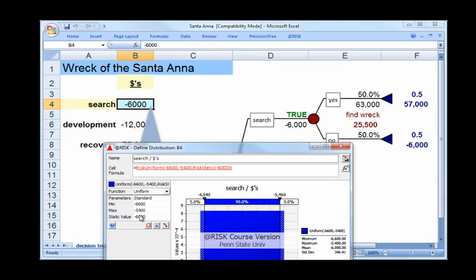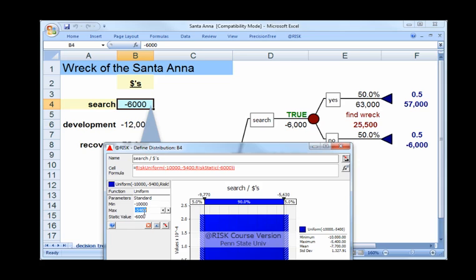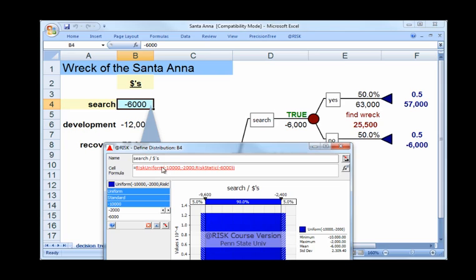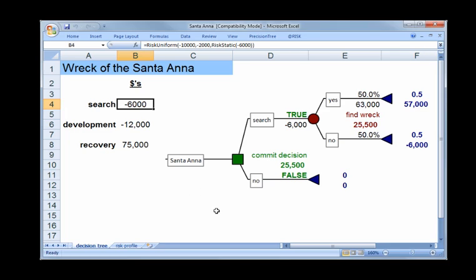There it is. And the only thing we have to do to define the uniform distribution is enter the minimum and the maximum. Keep in mind things are in negatives here. So minus $10,000 is the small number, minus $2,000 is the maximum. And the static value, notice that at-risk has taken as a static value the minus $6,000 that was originally in the box. You leave that alone. That's just a placeholder. Hit OK. And when we do that, we get a risk uniform distribution in B4 that looks like this up here.